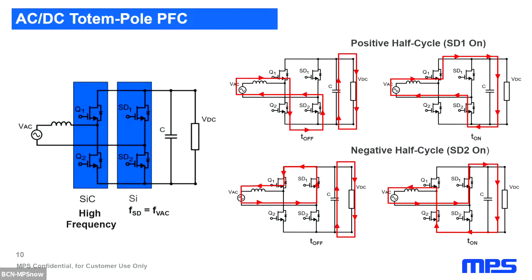Reviewing how the AC-DC totem pole PFC works: it has mainly four cycles depending on the position of the four switches. Two switches, called SD1 and SD2, are switched at grid frequency — so for a 50Hz grid, they switch at 50Hz, either in the positive or negative half cycle, switching very slowly so no high-speed switching is needed. Looking at switches Q1 and Q2, it is like a boost converter implementation, and the control of these switches provides the PFC so that the input current is in phase with the input voltage. The behavior is very similar to a boost converter but with a reduced number of components.